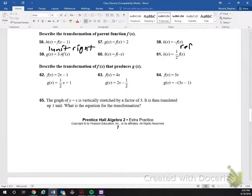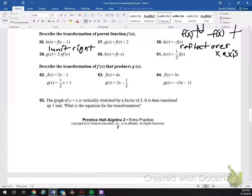58. So this is a negative f of x. This isn't just where you're negating the x, but you're negating the entire function. What that does is it reflects it over the x-axis. So it's going to flip the entire thing upside down. So if I had a parabola like so, and let's say that's what my original function was. If this is f of x, then negative f of x would look something like that. Flips it over the x-axis.